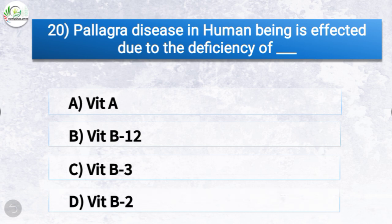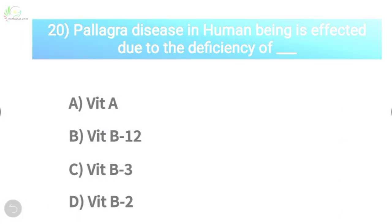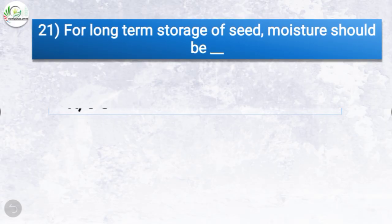Question number twenty: pellagra disease in human beings is affected due to the deficiency of which vitamin? The options are Vitamin A, Vitamin B12, Vitamin B3, or Vitamin B2. The correct answer is option C, Vitamin B3. So pellagra disease in human beings is affected due to the deficiency of Vitamin B3, which is also called niacin.